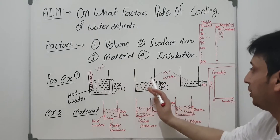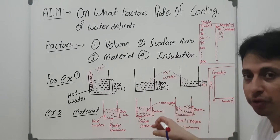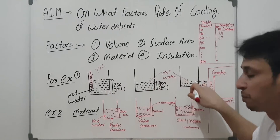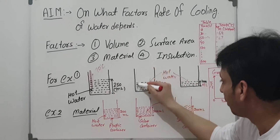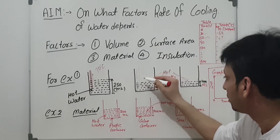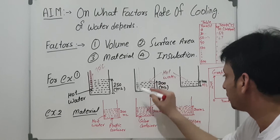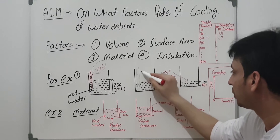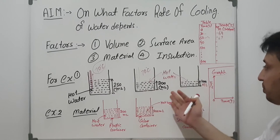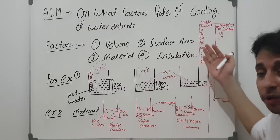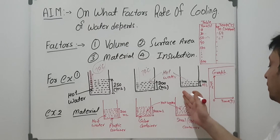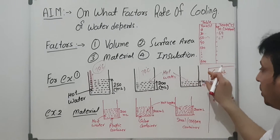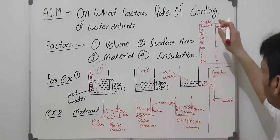Then repeat the experiment by placing the thermometer in the second beaker filled with hot water. Remember, children, you must maintain the initial temperature constant in each experiment — here we have taken 70 degrees Celsius. Record the readings in the next table for the second observation. Similarly, for the third beaker with 100 ml volume, use the thermometer and stopwatch to measure and write down all values in the table.